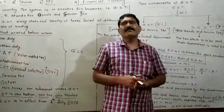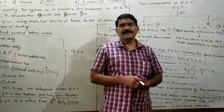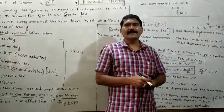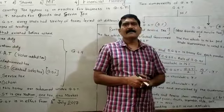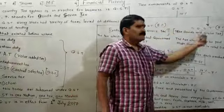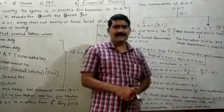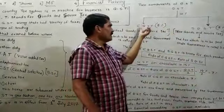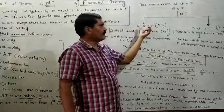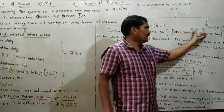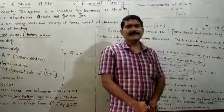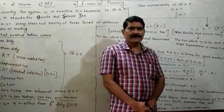For running both the governments, the customer pays the tax in two parts: one is CGST and another one is SGST. The tax paid for the central government is called CGST, and the tax paid for the state government is called SGST.